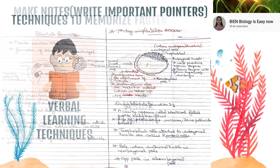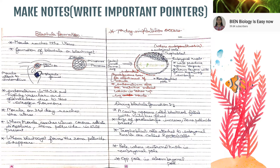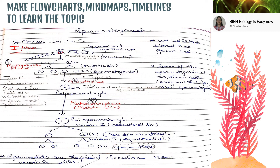Make notes and write important pointers in them. Make flowcharts, mind maps, and timelines to learn the topic — this is very helpful. As shown in this picture, I have made a flowchart on my own where I have mentioned everything. If you see this flowchart you will be able to understand the process of spermatogenesis. When you make your own mind maps, timelines, and flowcharts, things become easy to learn.